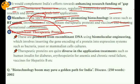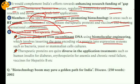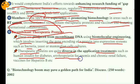Recombinant therapeutic proteins are produced from recombinant DNA using biomolecular engineering, which involves inserting the gene encoding of a protein into expression systems such as bacteria, yeast, or mammalian cell structures. Therapeutic proteins are diverse in applications — treatments include human insulin for diabetes, erythropoietin for anemia and chronic renal failure, and Hepatitis B vaccines.